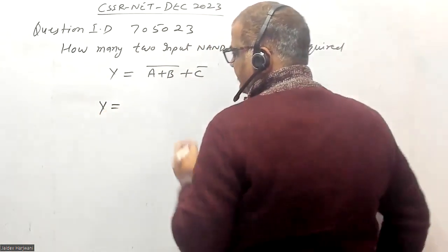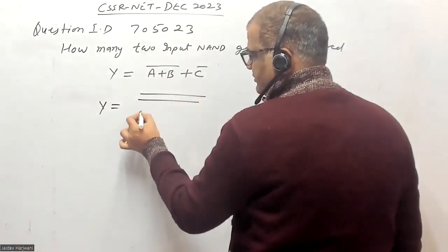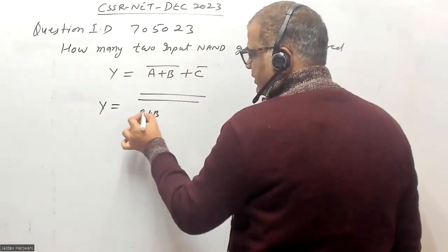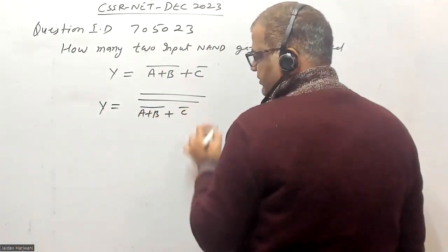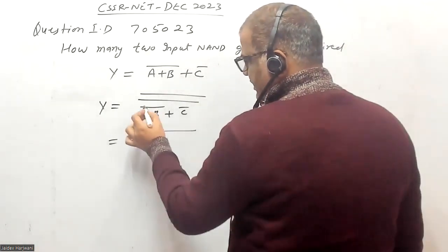So first we have to bring this term in the form of NAND gate output. Put two complements, so this will be A plus B plus C bar. Now if you solve this one, this complement will be removed, double complement.